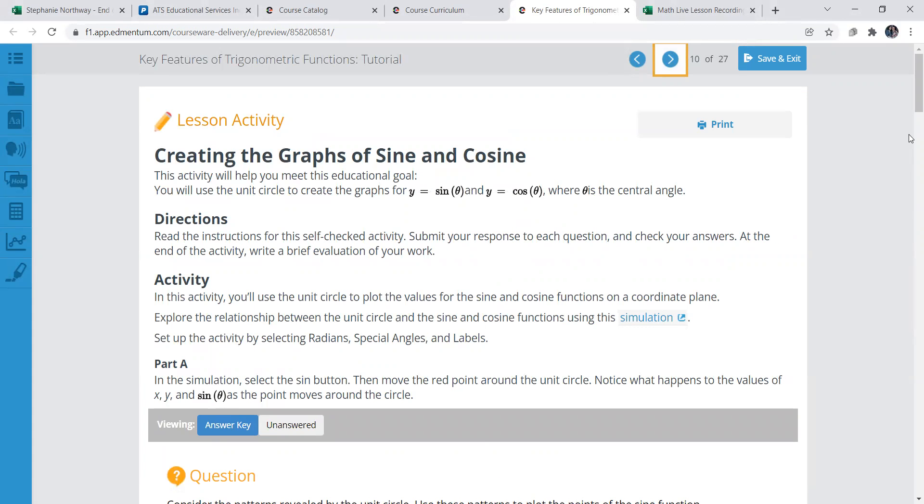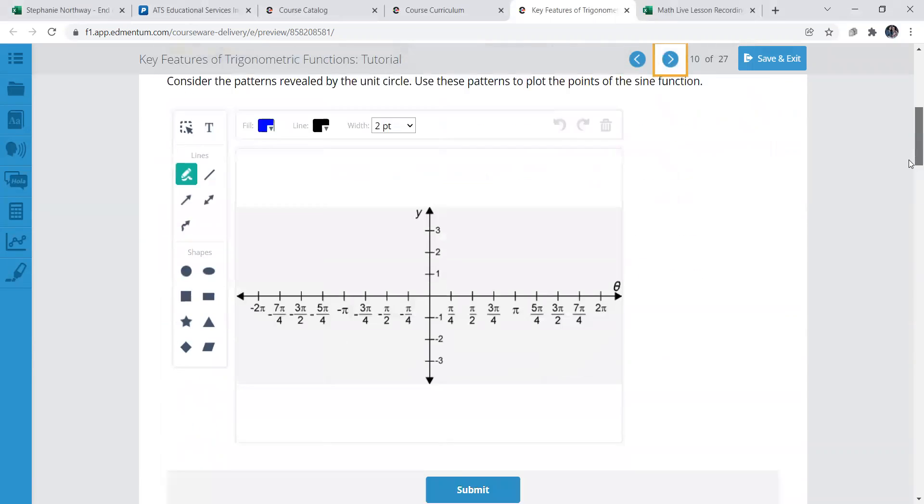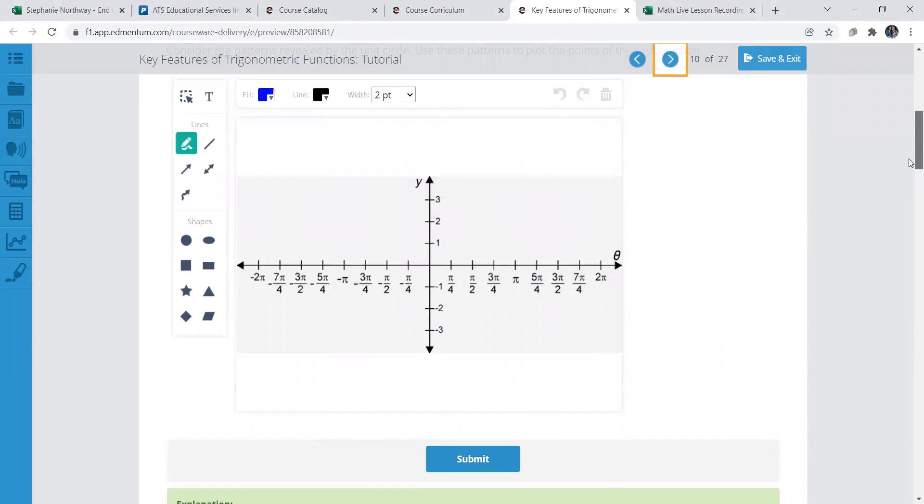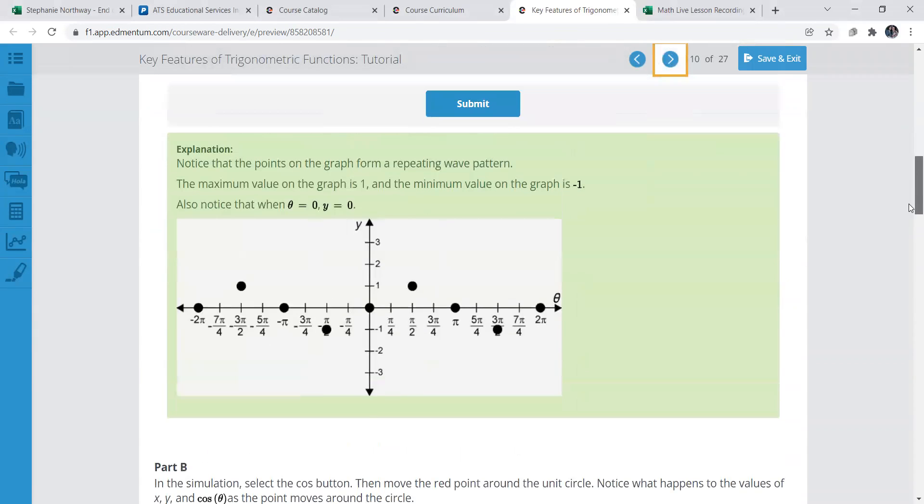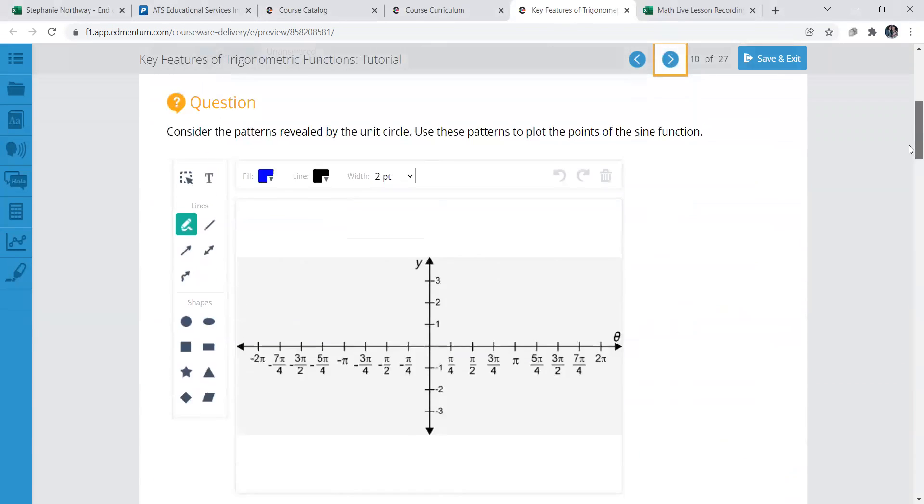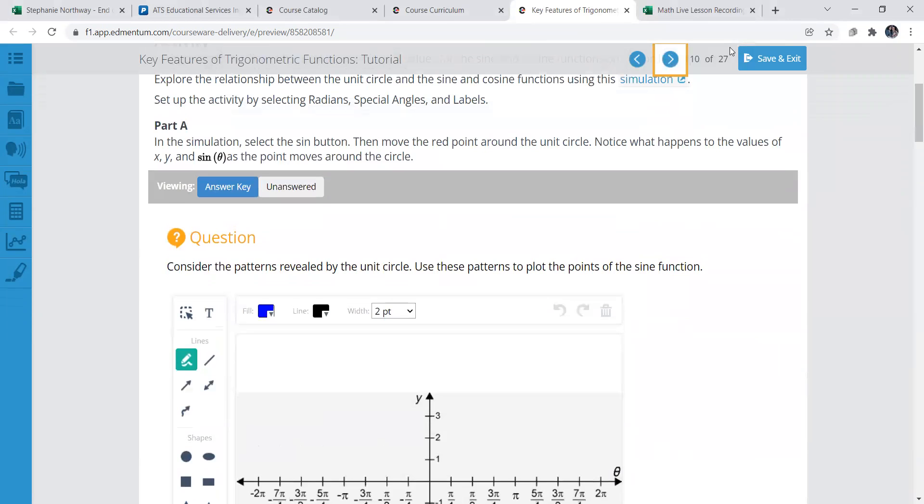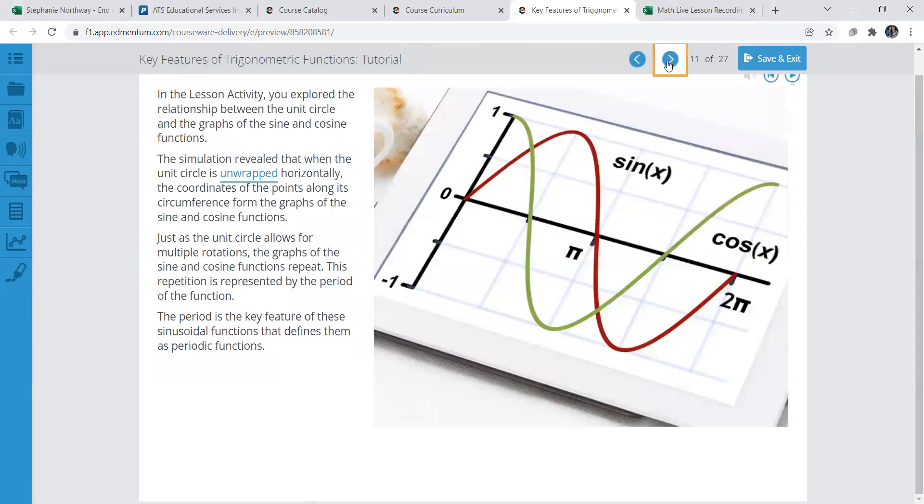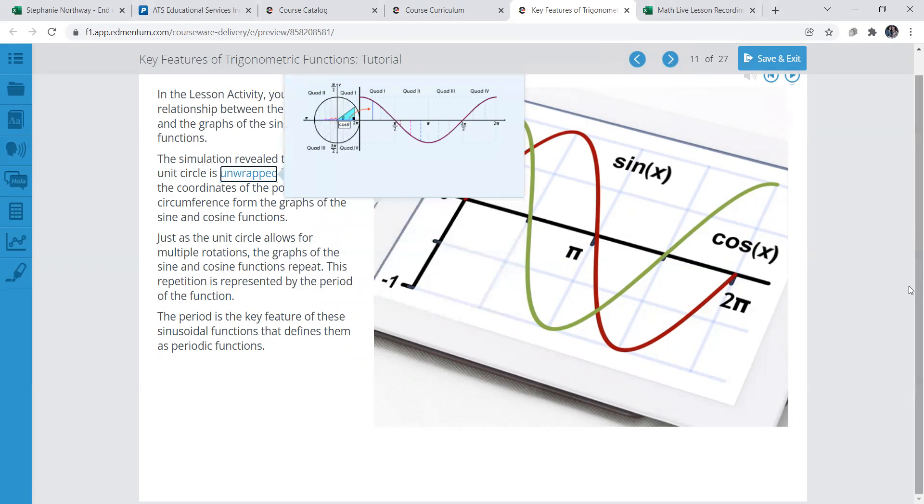And let's go next, creating the graphs of sine and cosine. You'll have to create a graph here, this gives you an example of a little bit of a unit circle here. But you'll just have to plot the points on the graph. Typically they're going to be in some form of a wave type graph, so you'll see waves.